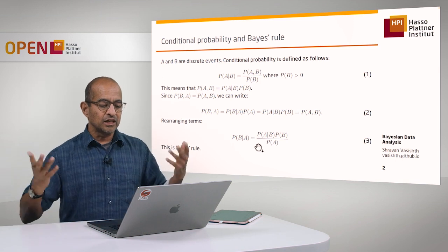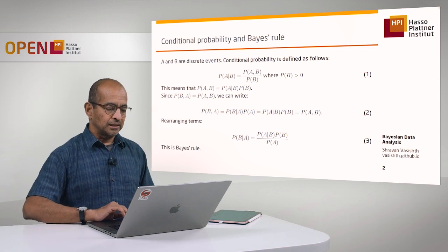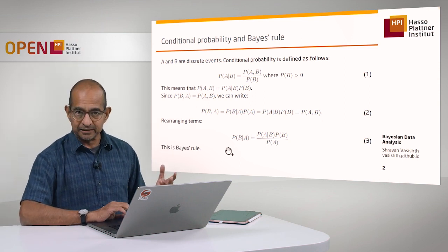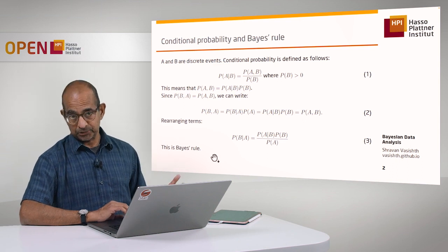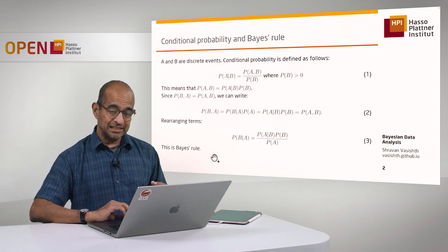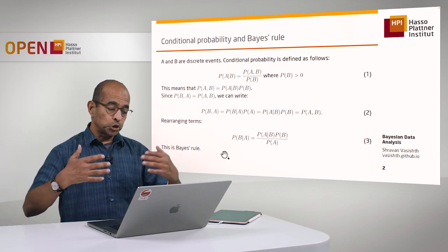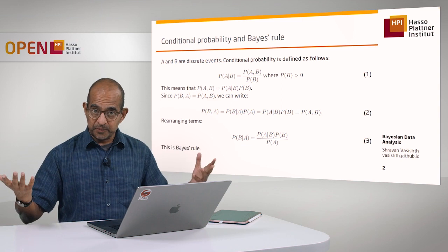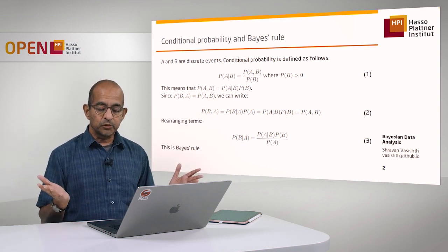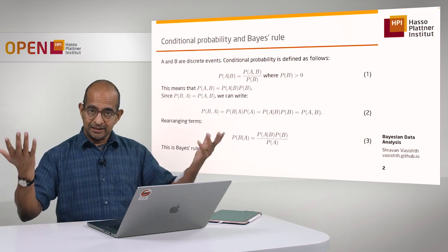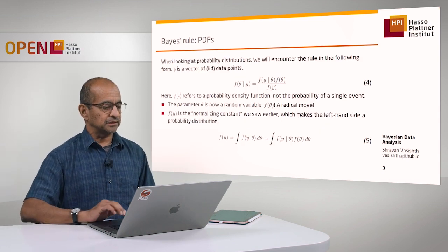This is a clear consequence of the conditional probability rule, so it's not controversial and there's nothing to debate here. It just follows from the conditional probability rule and this is called Bayes' rule. What's really amazing about this rule is that it's going to allow us to carry out very complex data analysis using this simple equation in a continuous setting. That's what I'm going to discuss in subsequent lectures.